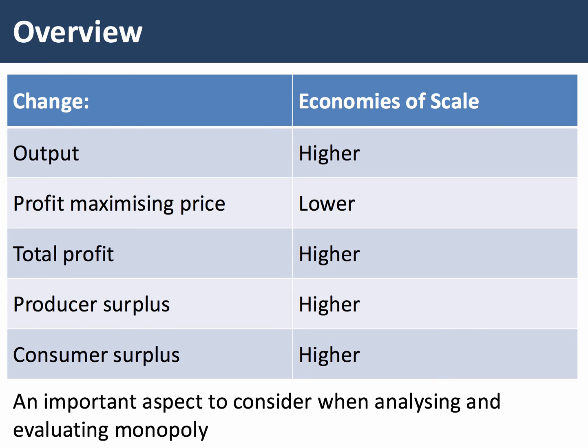So with economies of scale, the output is higher. In the long run, the profit maximising price is lower. The total profit is higher. Producer surplus is also higher, as is consumer surplus. And this is an important aspect to consider when you're analysing and evaluating monopoly markets and oligopoly, where businesses can achieve some significant internal economies of scale.